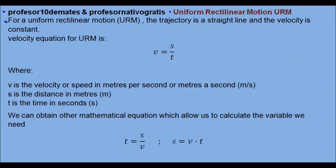So for a Uniform Rectilinear Motion, URM, the trajectory is a straight line, and this is important. It has to be a straight line. If not, the equation doesn't work. And the velocity has to be constant. This is also important.